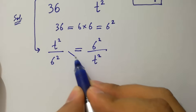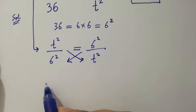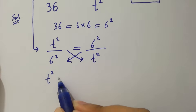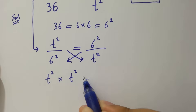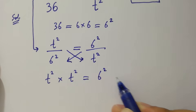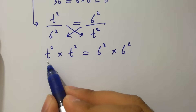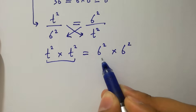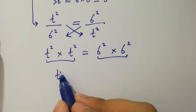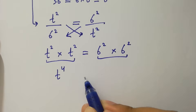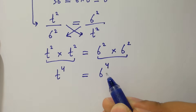By cross multiplication, we have t square times t square equal to 6 square times 6 square. Since the base is the same, the powers add: t to the power 2 plus 2, which is 4, equal to 6 to the power 2 plus 2, which is 4.